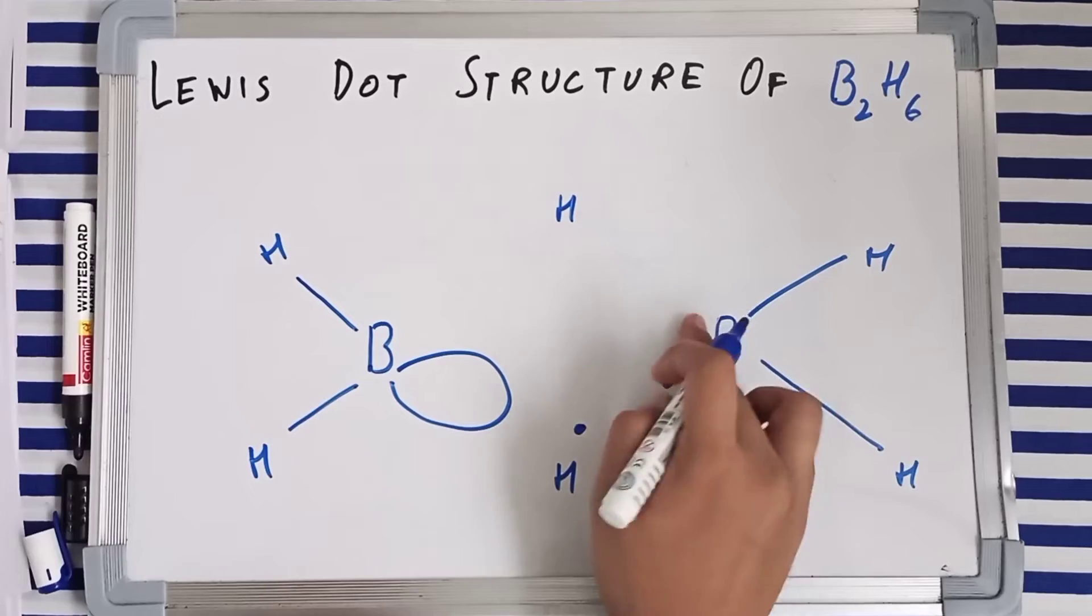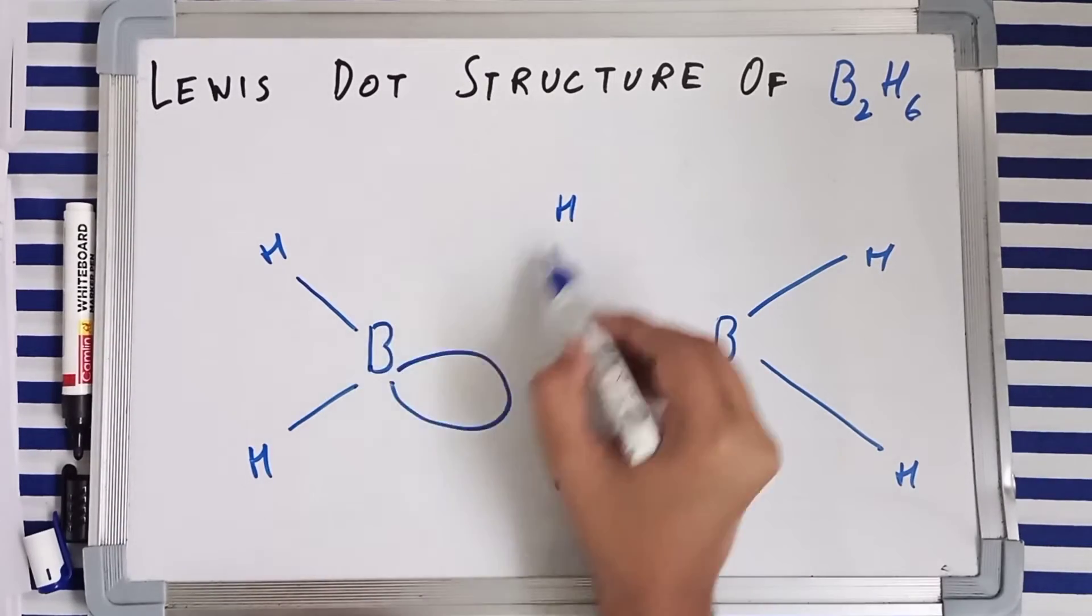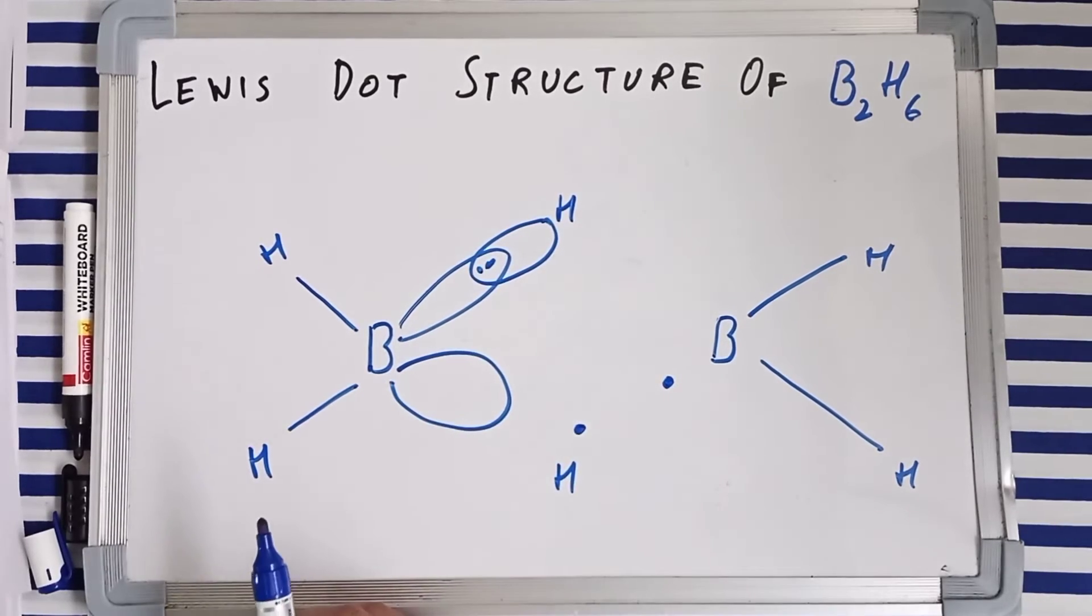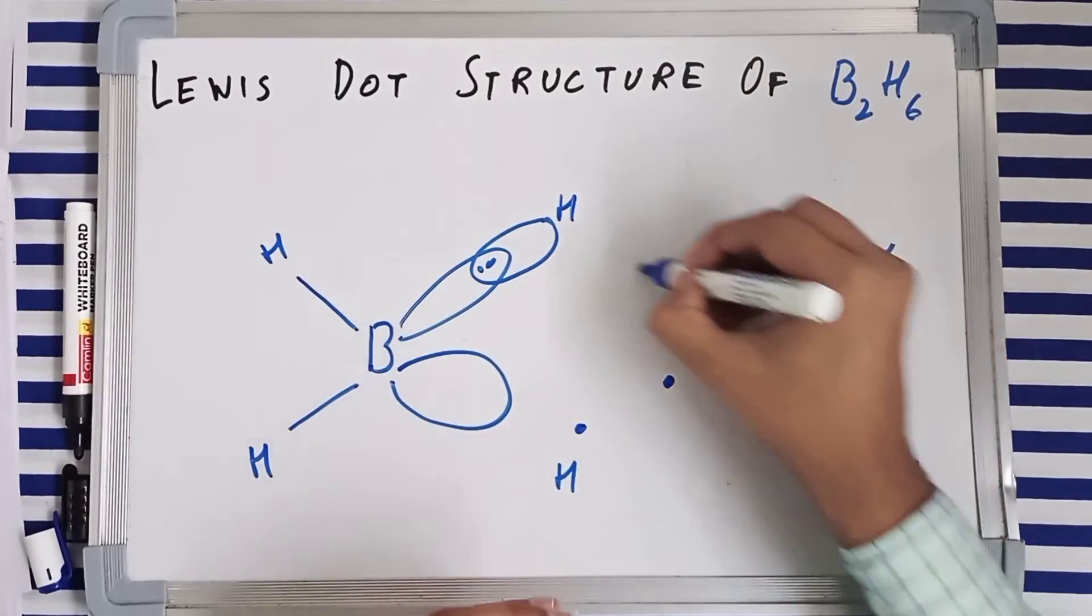Now this boron can extend its orbital, and this was also a formation of orbitals. You had electrons shared between the orbitals, and boron also had a vacant orbital.